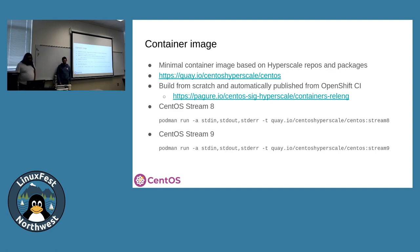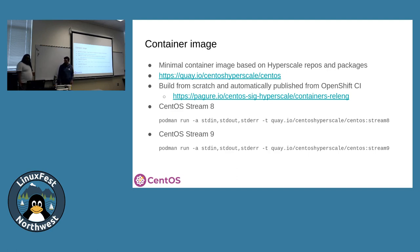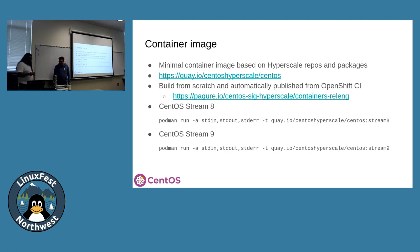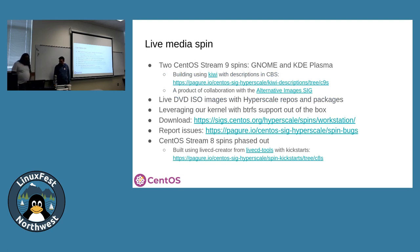We also have container images that use the Hyperscale repos and packages. They're published on Quay, built from scratch, and intended to be automatically published — though the CI is currently broken, mostly because of OpenShift complexities. You can get them from Quay for both Stream 8 and Stream 9. These don't inherit from the official CentOS containers for technical reasons, but you can find the Dockerfile used to build them in the repo.